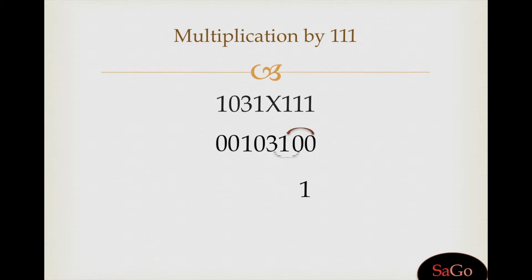Zero plus one plus three is four, write four. One plus three plus zero is four, write four. Three plus zero plus one is four, write four.